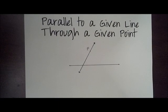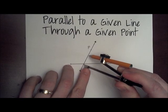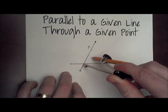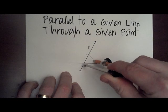Once we draw the transversal, we're going to construct an arc here at the point where they intersect. Oops, a little slip of the compass.